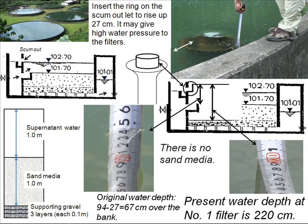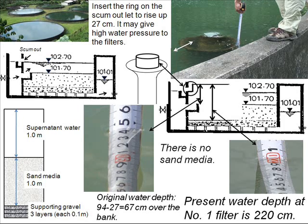They inserted a ring on the scum outlet to raise the water level by 27 cm. This may give high pressure to the filters. The present depth was 220 cm in number 1 filter. However, the original design depth was 1 meter, but the depth was only 67 cm at construction time in 1985.